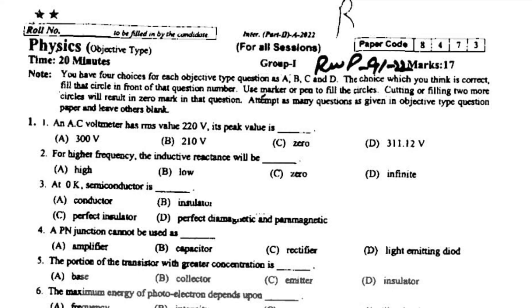An AC voltmeter has RMS value 220 volt. Its peak value is 311.12 watt. For higher frequency, the inductive reactance will be infinite.